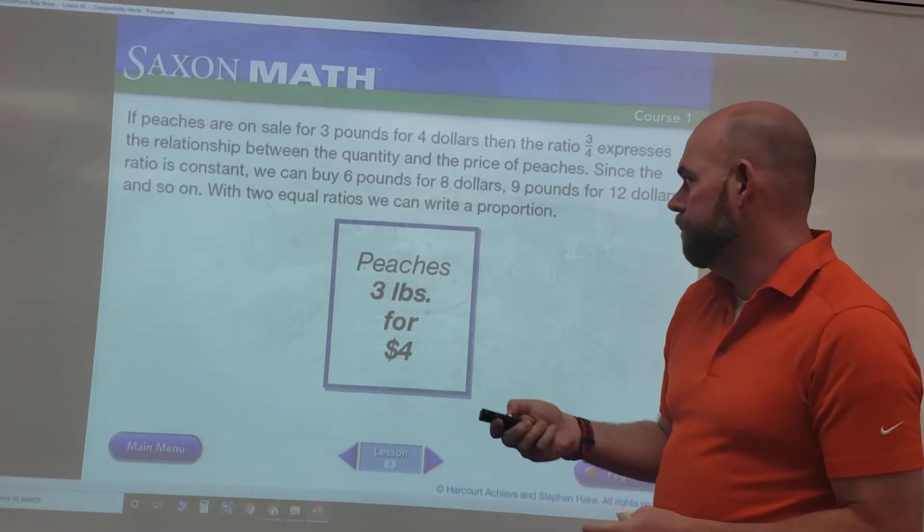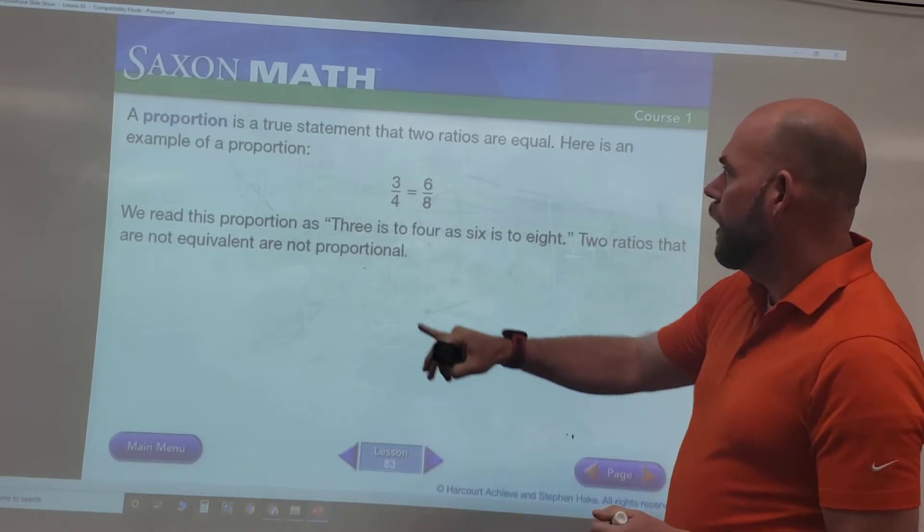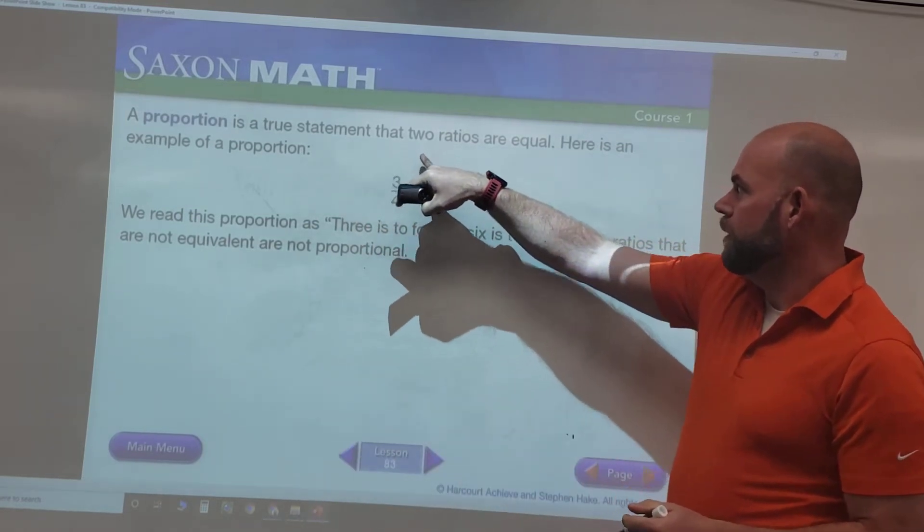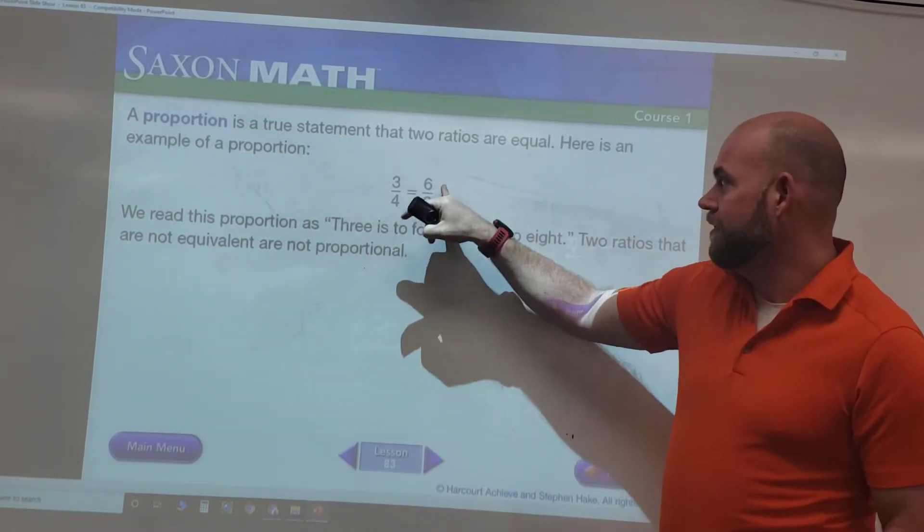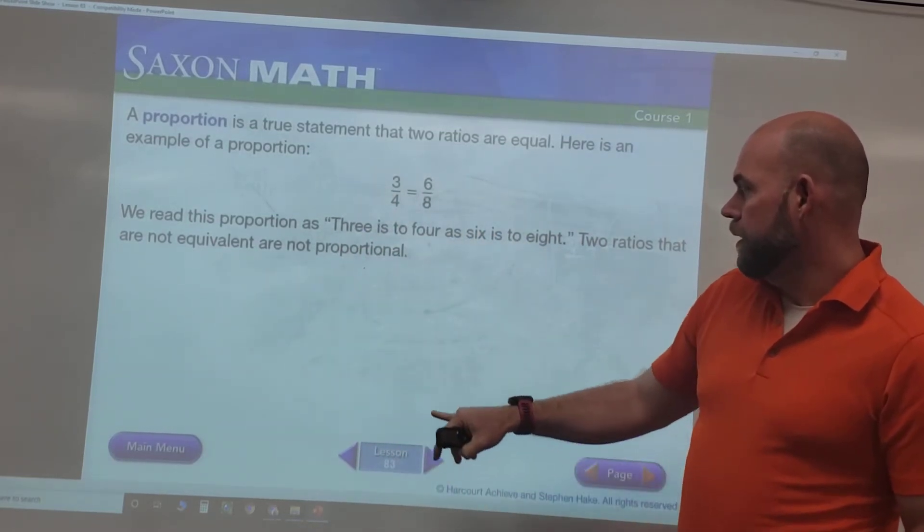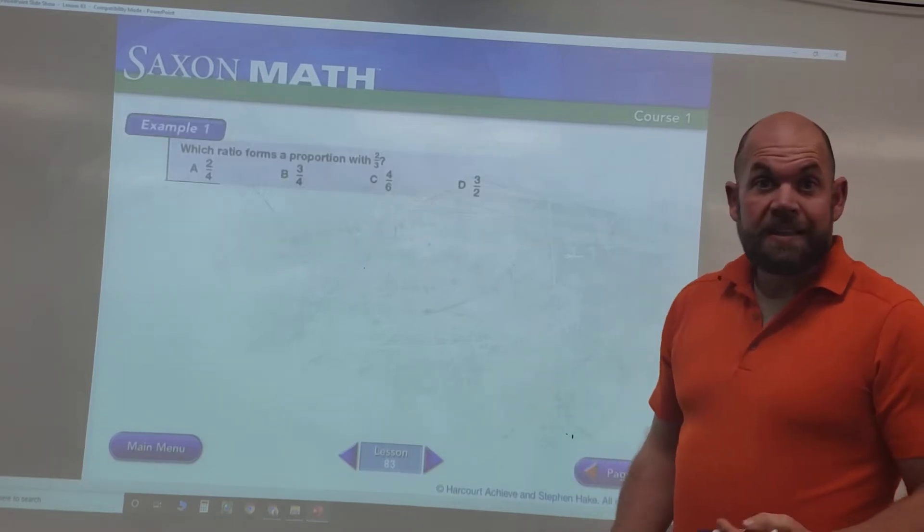So we can write a proportion as a true statement that two ratios are equal. Here's an example: three is to four as six is to eight.